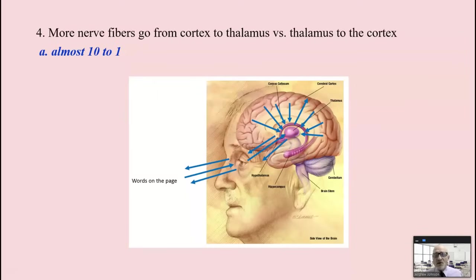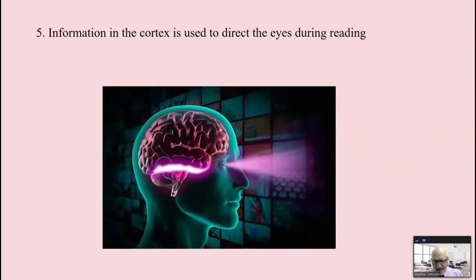Almost 10 times more information is flowing from the cortex down to the thalamus, then from the thalamus up during the act of reading. For example, we encounter the words on the page, hit the eyeballs, go to the thalamus, go up to the cortex. Yes. But almost 10 times more information is flowing down. This is the interactive model. Bottom up and top down.